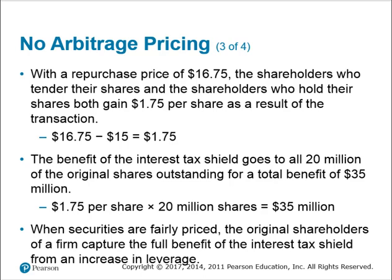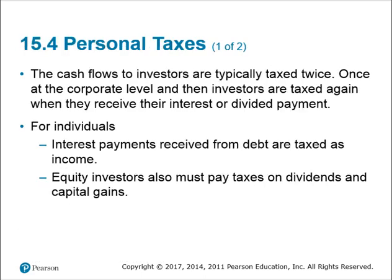Essentially, there are a lot of things that work here. We've added an imperfection — taxes — but we're also talking about whether or not shareholders know about the transaction. If they know about the transaction, that will trigger a change in value because of the information content in that announcement. Now let's add another twist: let's add personal taxes. We've already added corporate taxes; now let's add investor taxes.